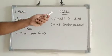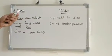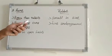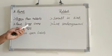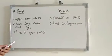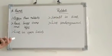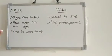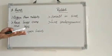Third one: Hare and Rabbit. In the case of hare, they are bigger than rabbits and they have large ears and legs. Hares usually live in open fields.